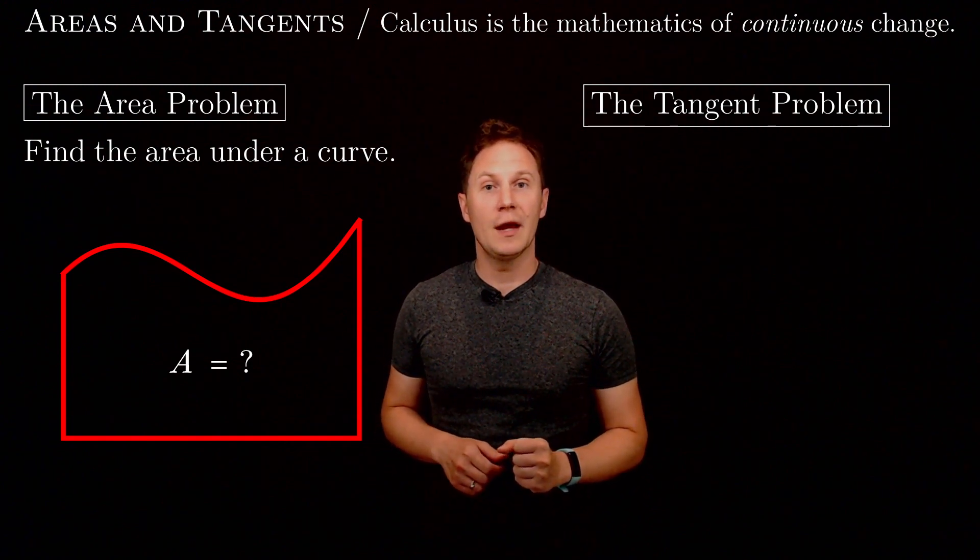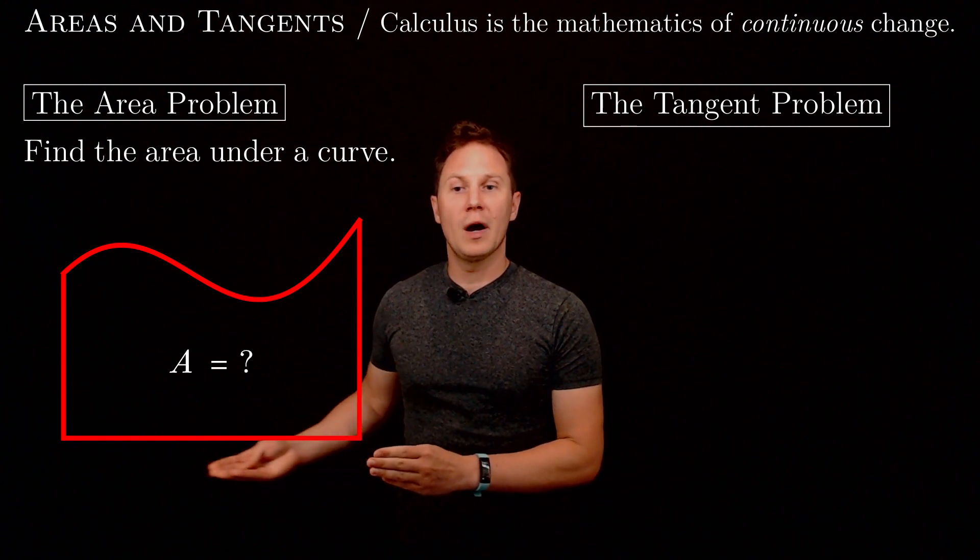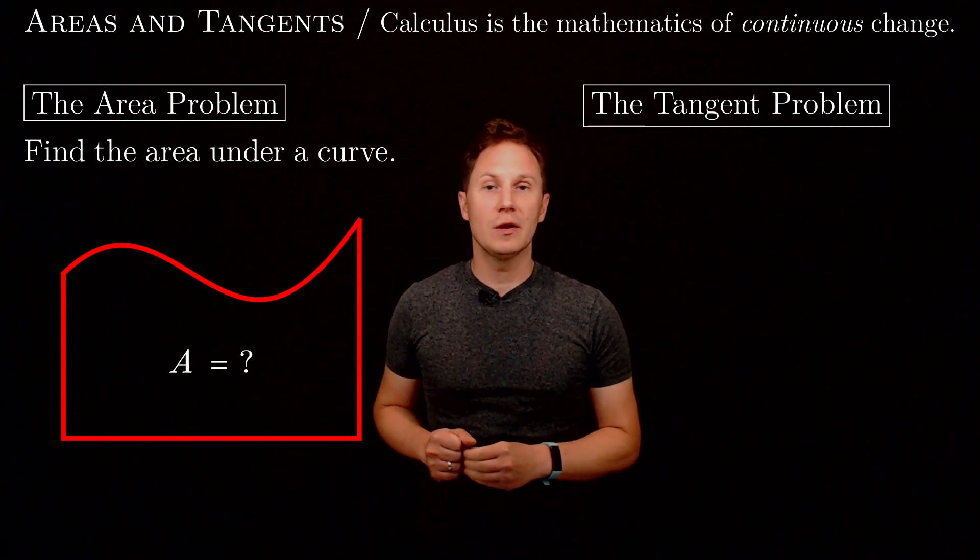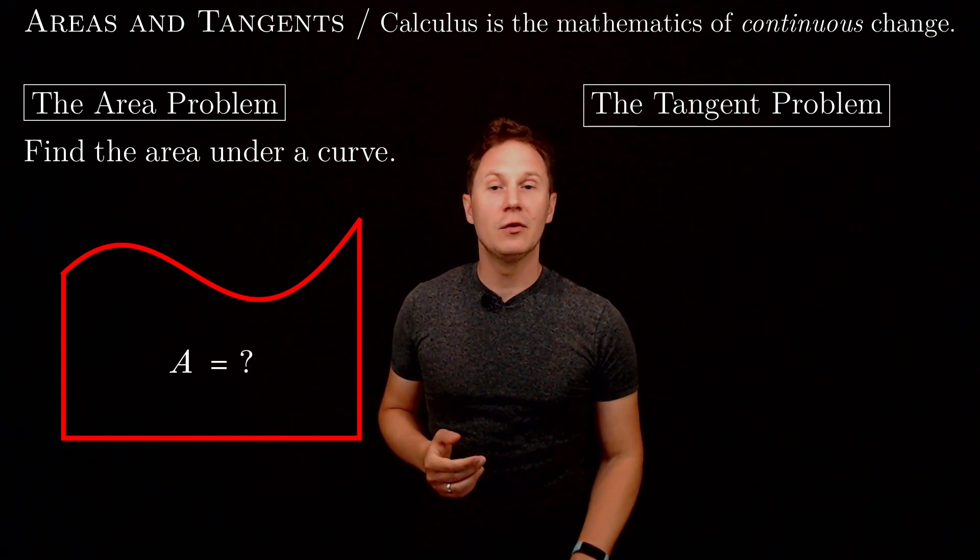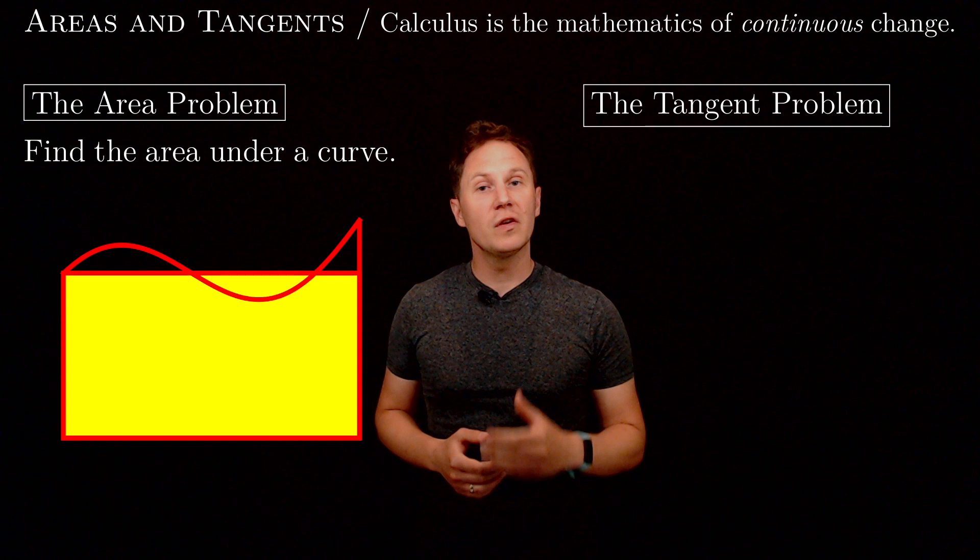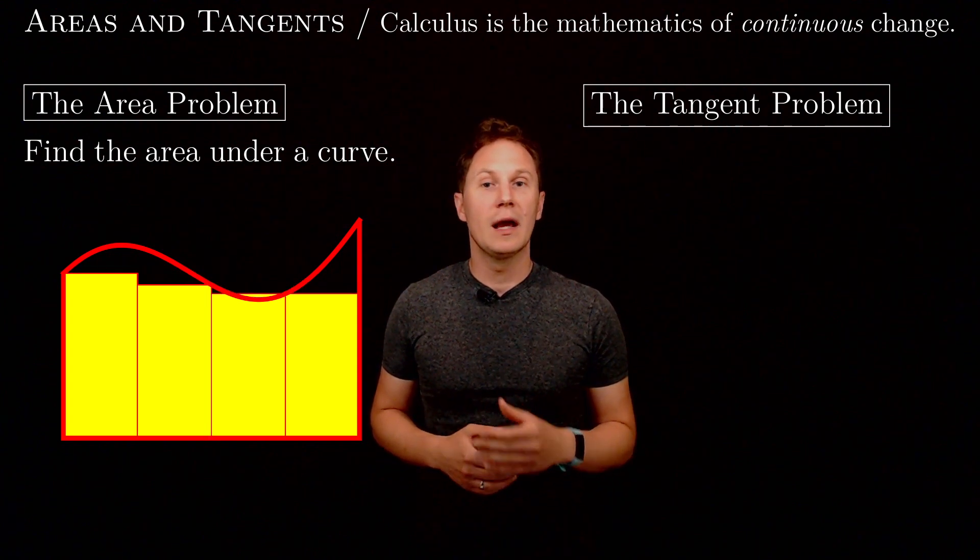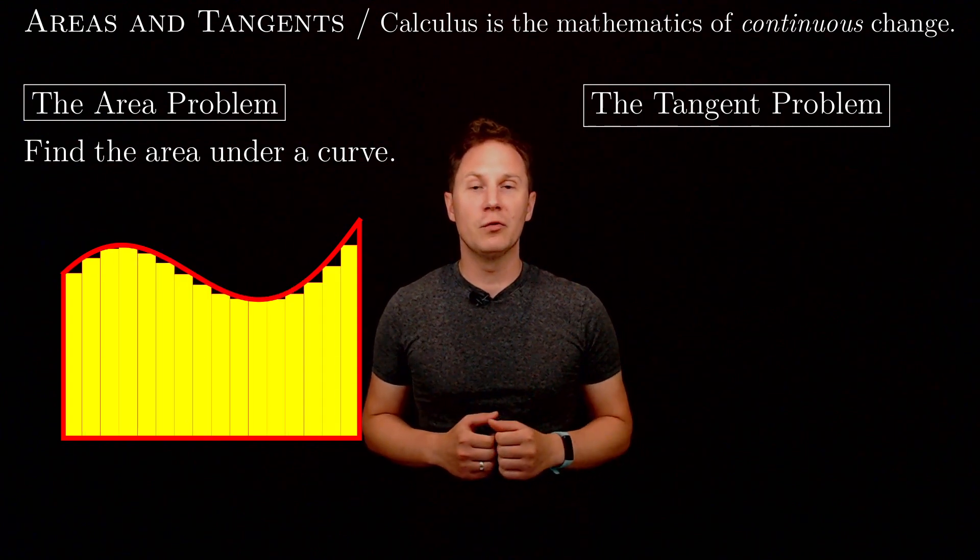The way we solve the area problem is by subdividing the base of that region and drawing rectangles above each section to approximate the area that we are looking for as the sum of the areas of these rectangles.